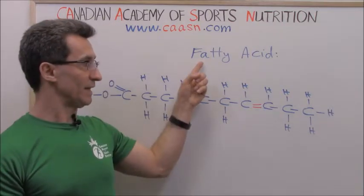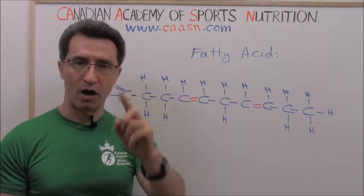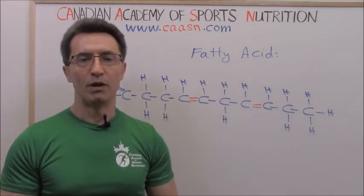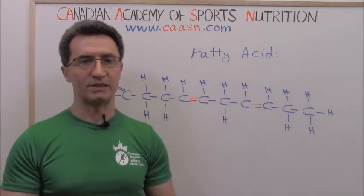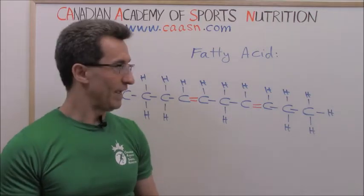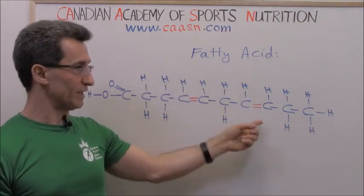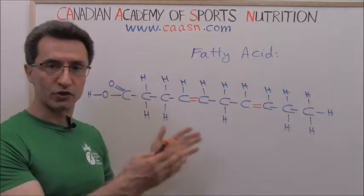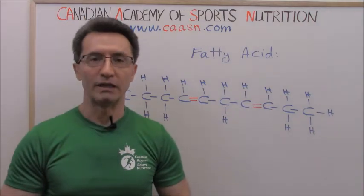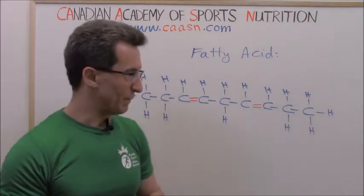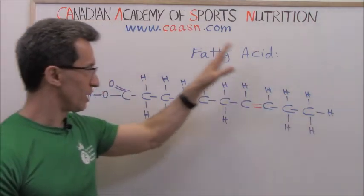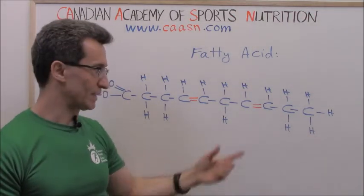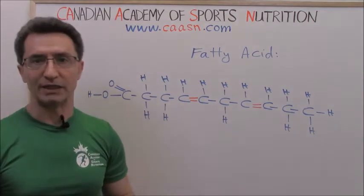If a fatty acid has one double bond in its structure, we call them monounsaturated fatty acid — for example, avocado. And if a fatty acid, like this one, has two double bonds or more in its structure, we call them polyunsaturated. Right now we know this is the chemical structure of a polyunsaturated fatty acid because it has at least two double bonds.